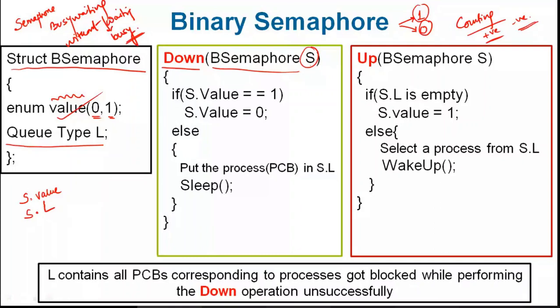In the down operation, if the value of the semaphore is 1, that means the critical section can be allowed — a value of 1 means the critical section is free. So we make its value 0 and enter the critical section. If the value of the semaphore is 1, it is made 0, which is similar to performing s.value-- as we were doing in the counting semaphore.